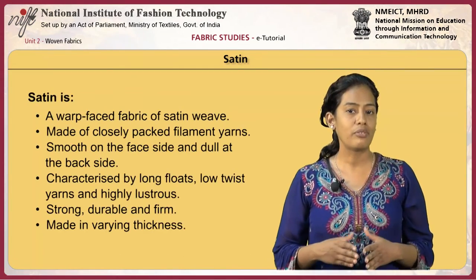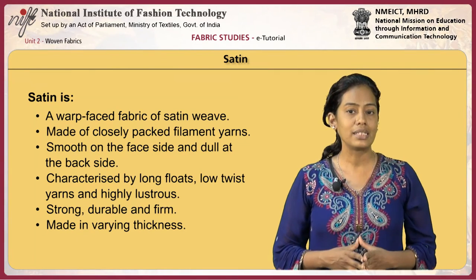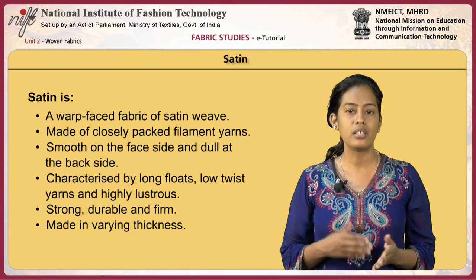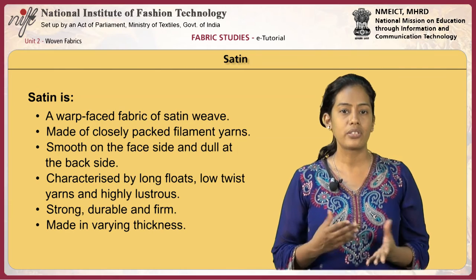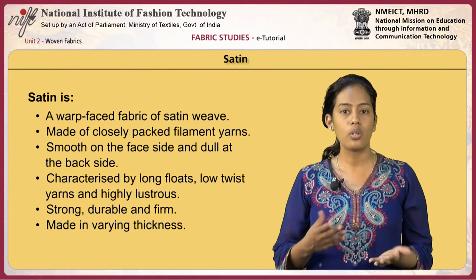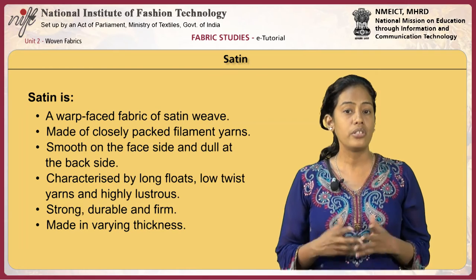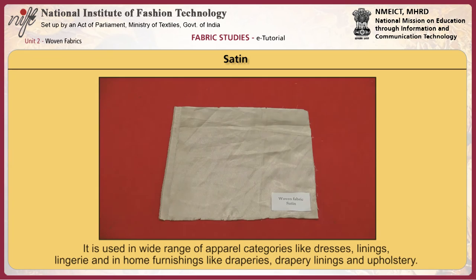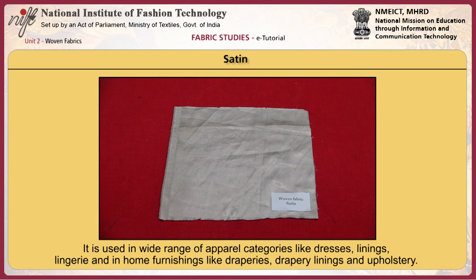Satin is a warp-faced fabric of satin weave, made of closely packed filament yarns. The fabric is smooth on the face side and dull at the back. It is characterized by long floats, low twist yarns and high lustre. It is strong, durable and firm, and made in varying thickness. Satin is used in a wide range of apparel categories like dresses, linings, lingerie and home furnishings like draperies and upholstery. It is flexible and more durable than taffeta as a lining fabric.